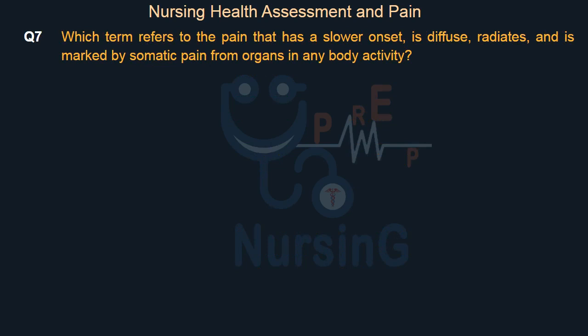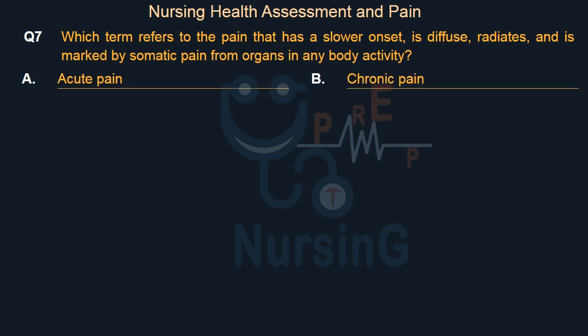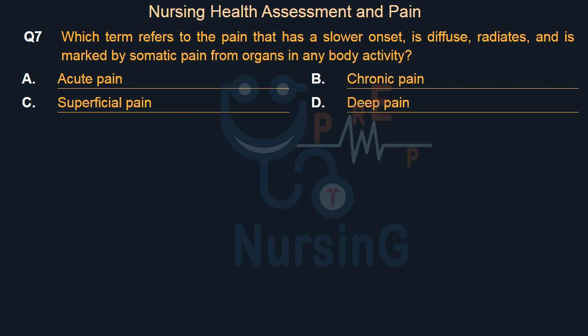Which term refers to the pain that has a slower onset, is diffuse, radiates, and is marked by somatic pain from organs in any body cavity? Option A: Acute pain. Option B: Chronic pain. Option C: Superficial pain. Option D: Deep pain. The right answer is Option D: Deep pain.